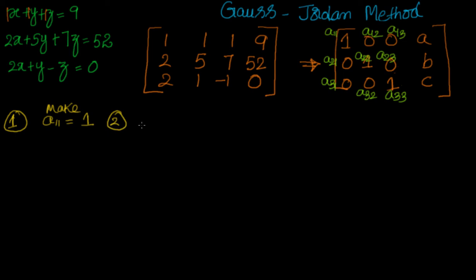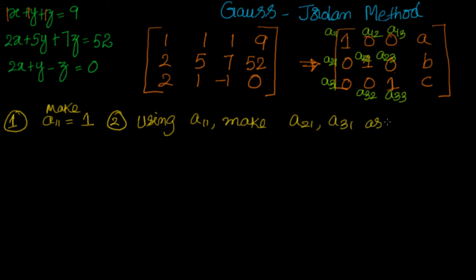Once that is done, the second step is: using a11, make a21 and a31 equal to 0.